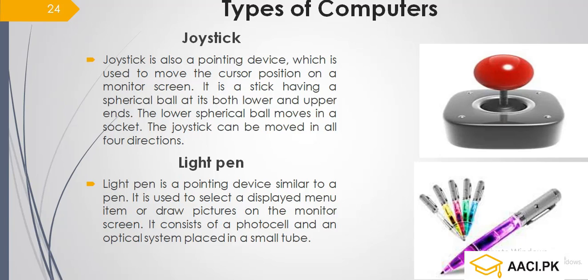The third input device is the joystick, which is also a pointing device. It has a ball which we move in four directions. Light pen is also a small input device similar to a pen. It consists of a photo cell and an optical system placed in a small tube.